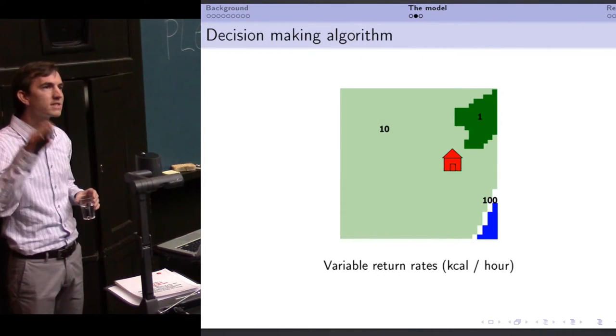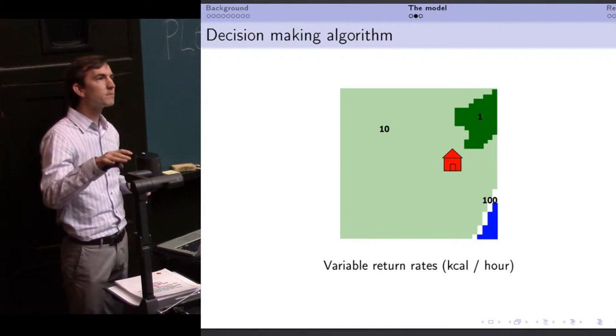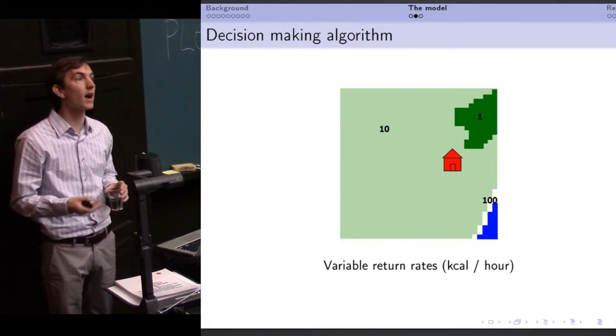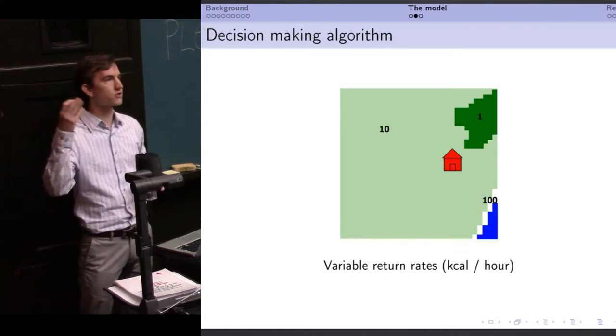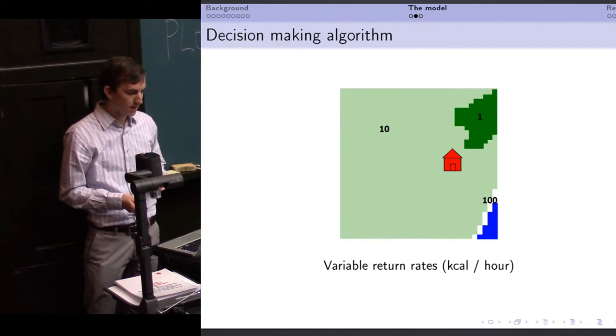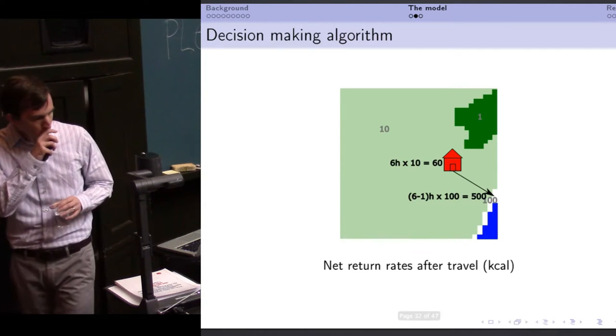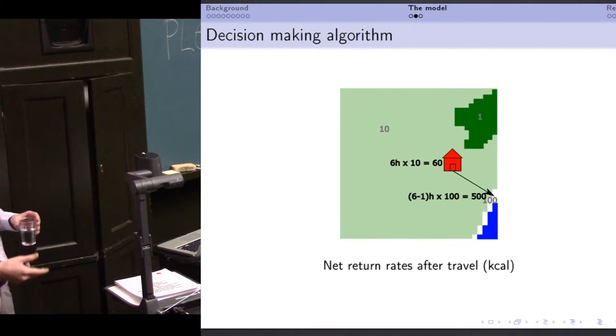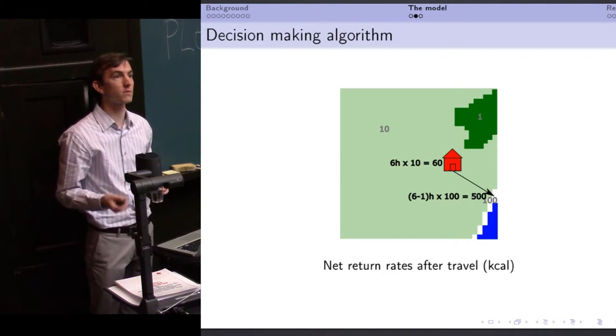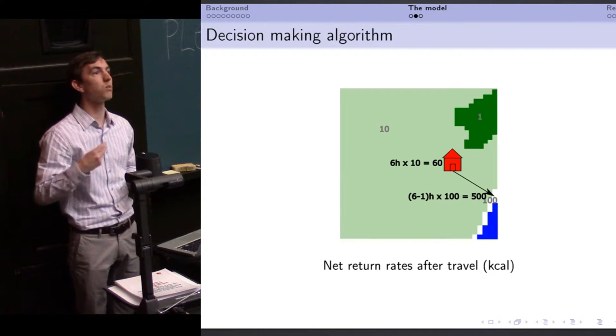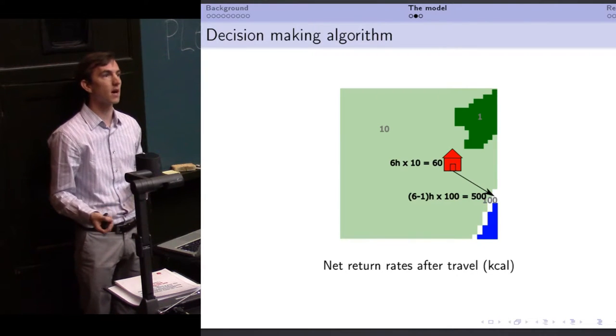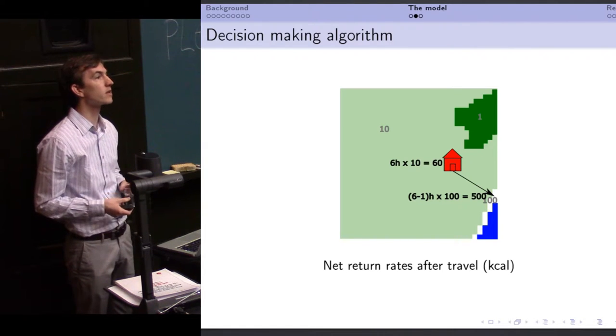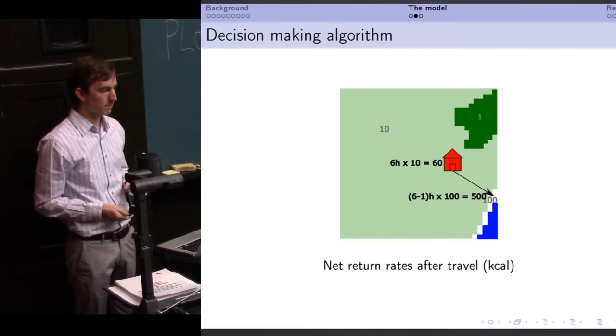All right. So the decision-making algorithm, stay with me here. We have variable return rates across the landscape classified by color. You can see the coastal patches here have a higher caloric return of a hundred calories per hour. These are not real numbers, just nice numbers for display here. So step one, you need to account for that spatial variability. If it takes you an hour to travel to the coast, that's an hour that you're not spending harvesting resources. So not only is there an energetic cost of walking, there's a loss because you're losing time, right? So if you stay where you are, you can harvest 60 resources. If you travel to the coast, suddenly you get 500. You lose an hour there, but you're still doing quite well.